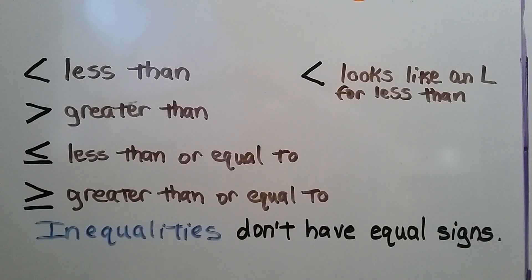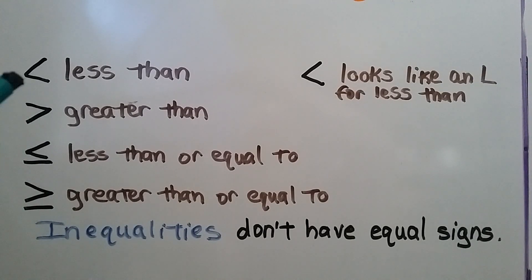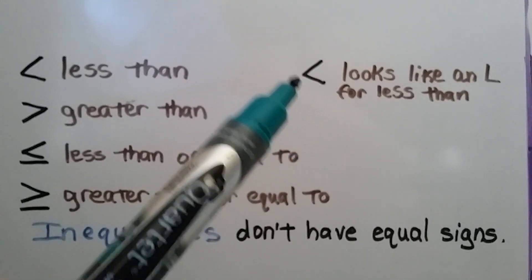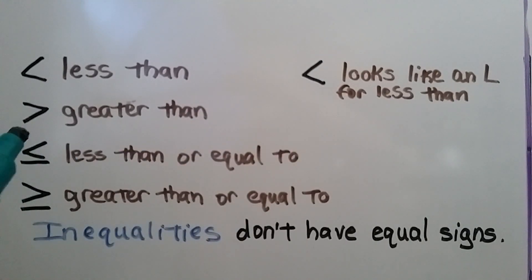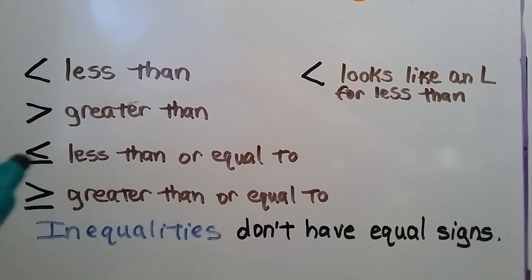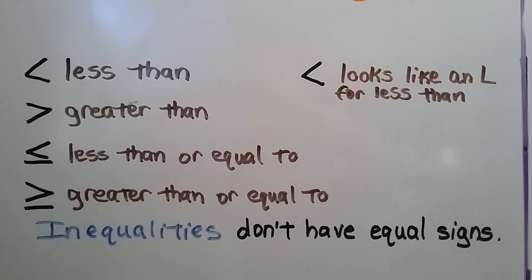The signs used in inequalities: there's a less than sign. You can remember that compared to greater than, it looks like a slanted L — L for less. So we have greater than, less than or equal to — when the bar is underneath the less than sign, it could possibly be equal to it also — and greater than or equal to. So inequalities don't have equal signs; they have one of these signs.